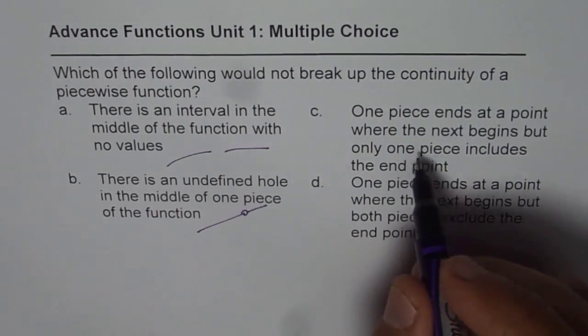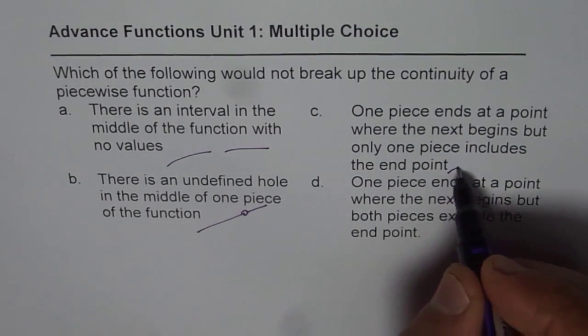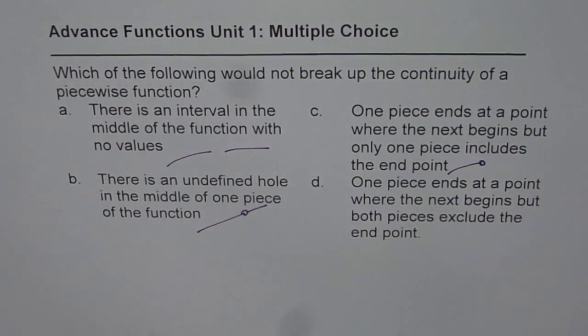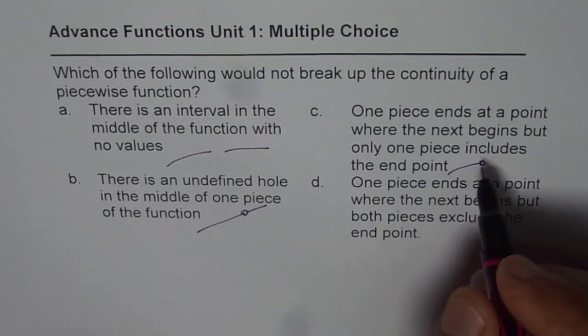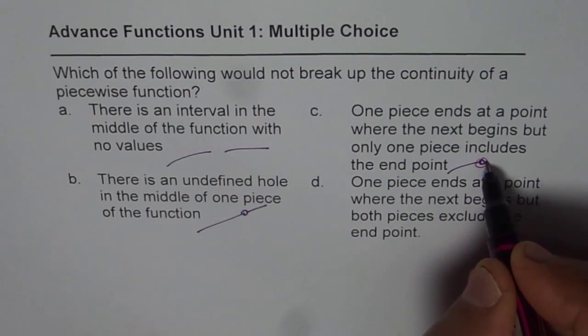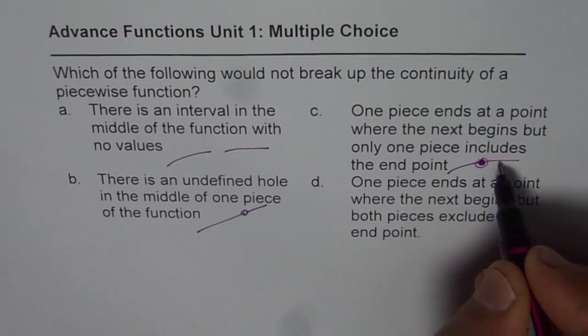For example, one piece ends at a point where the next begins, so one piece ends and the next begins, but only one piece includes the end point. So the next begins, but let us say the next one includes. So it becomes continuous here.